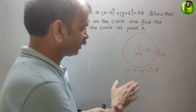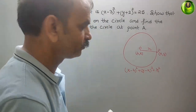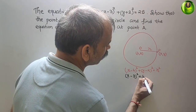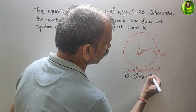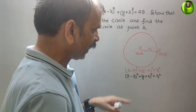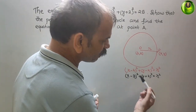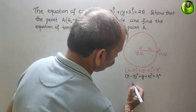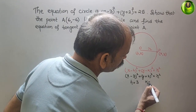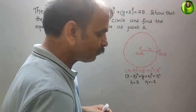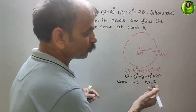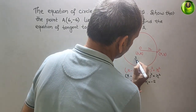Comparing our given equation with the standard form, we get h = 3 and k = -2. That means the center coordinates are (3, -2).